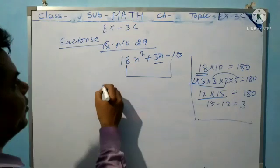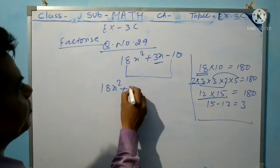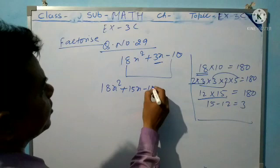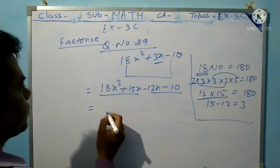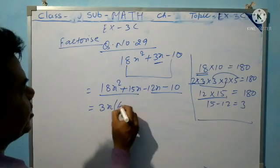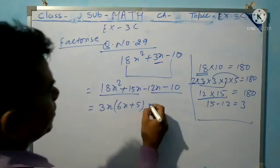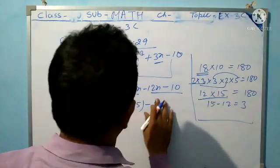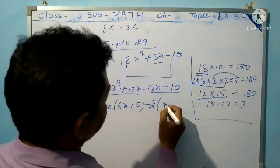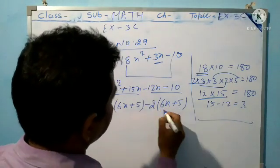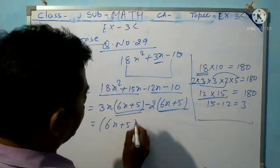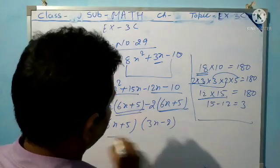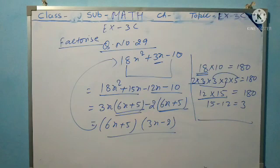So we write 18x² + 15x - 12x - 10. Taking two terms: 3x is common, giving 3x(6x + 5). In the second term, -2 is common, giving -2(6x + 5). Both terms have (6x + 5) common, so the factorization is (6x + 5)(3x - 2).